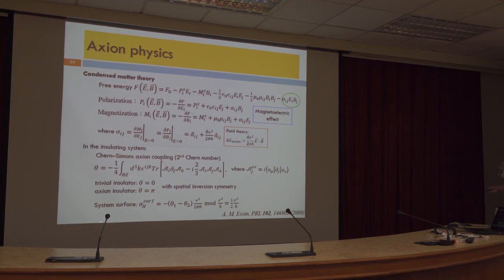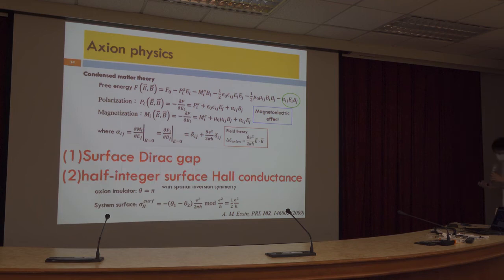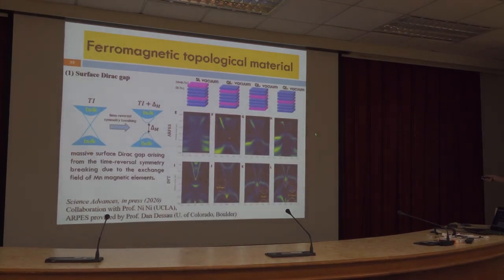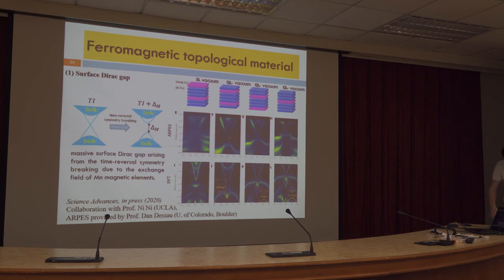The most famous property of the axion insulator is the half-integer surface Hall conductance. For an axion insulator there are two observations: first, a surface Dirac gap, and second, a half-integer surface Hall conductance. We check these two properties in MnBi2Te4·1A3. This is ARPES data for four different terminations. This panel is our surface spectral weight simulation. We found that all terminations show a clear surface Dirac gap, and they are consistent quite well with the ARPES data.